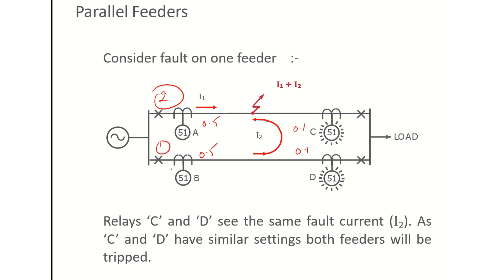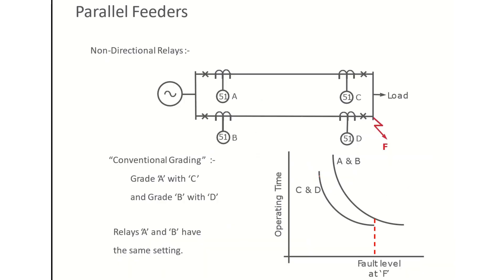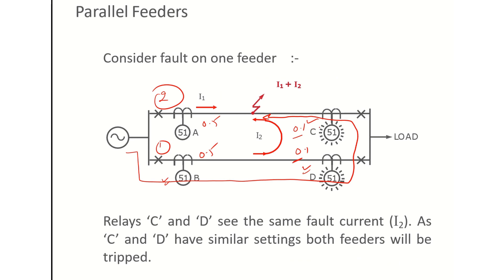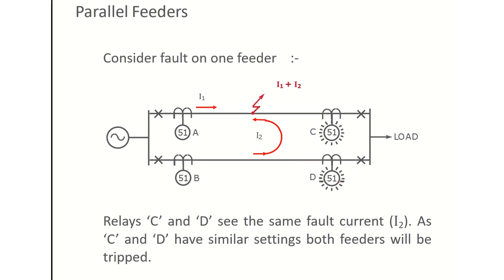Now if relay C sees 1 ampere fault current, relay D will also see 1 ampere fault current, because it is the same current flowing through that path. Relays C and D have the same or similar operating characteristics and see the same current, so both will operate at the same time and issue a trip command for a fault on feeder 1. This is clearly not desirable because we want only relay A and C to operate.